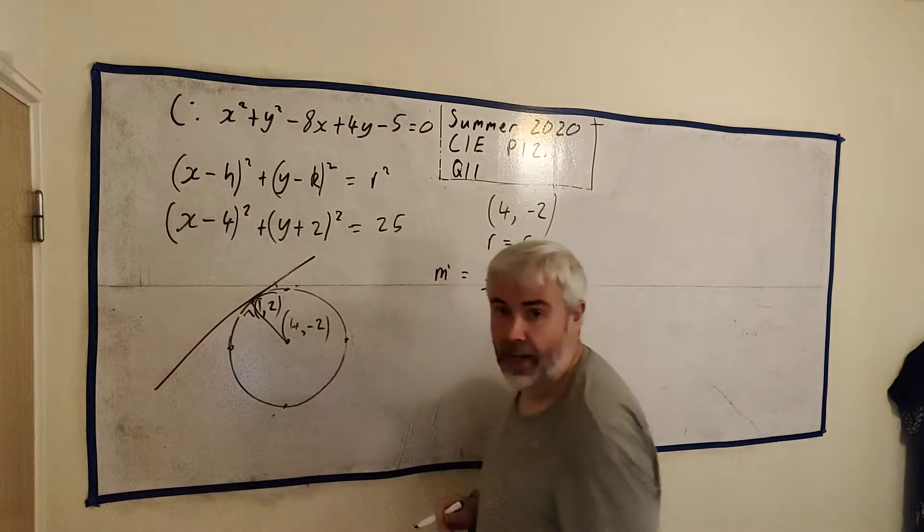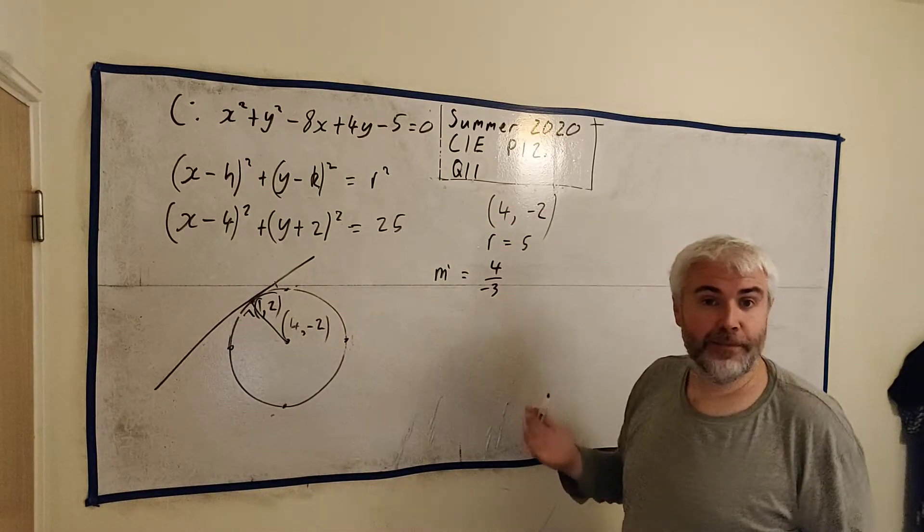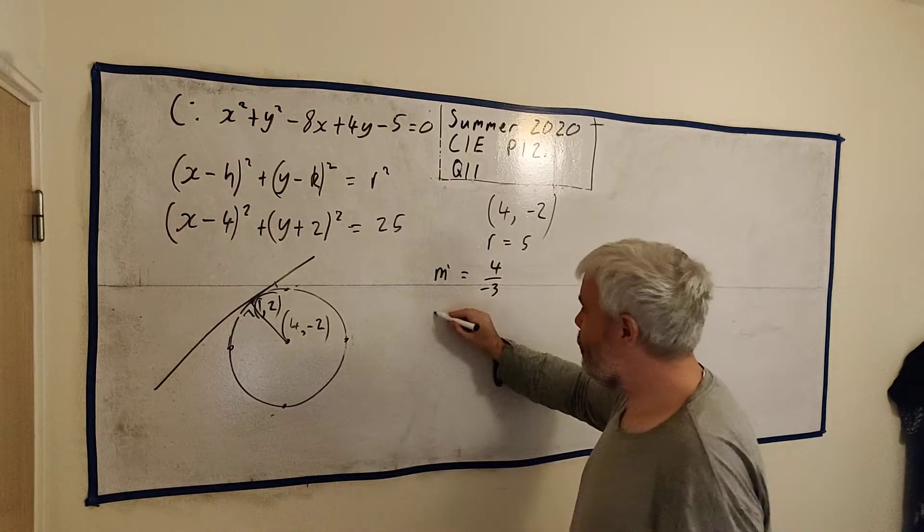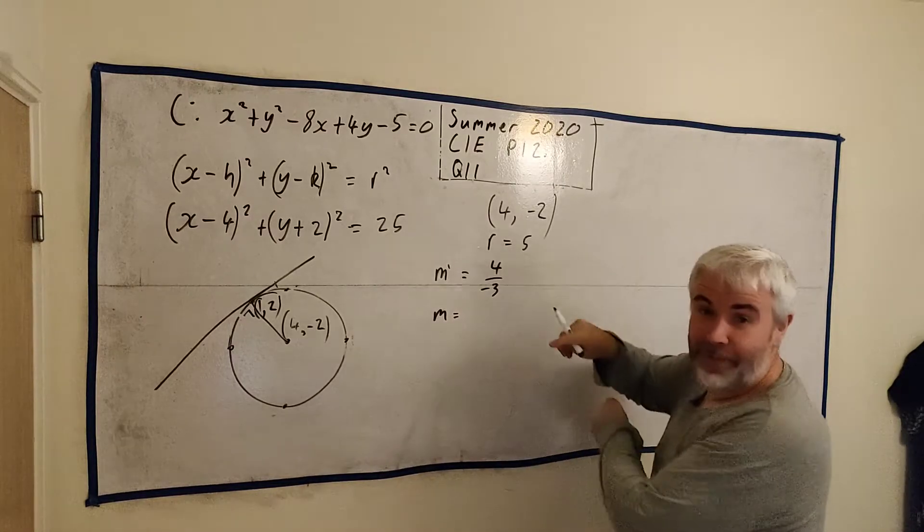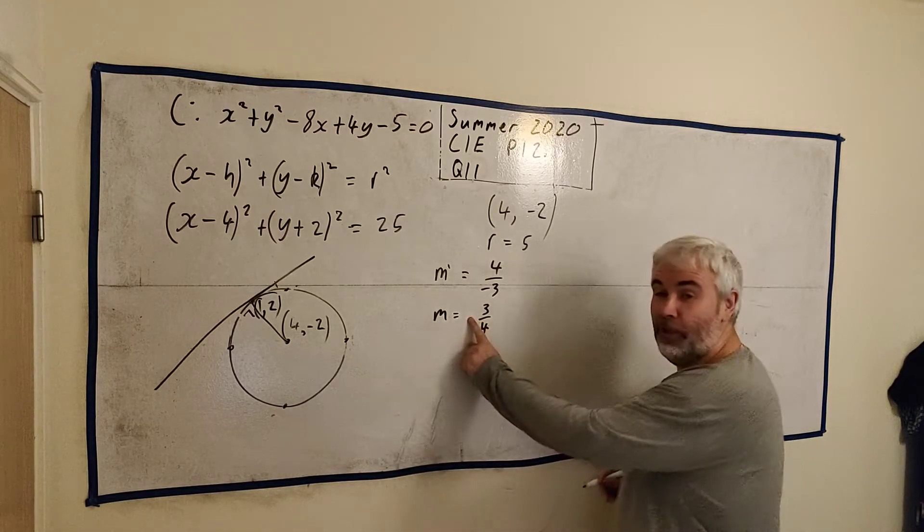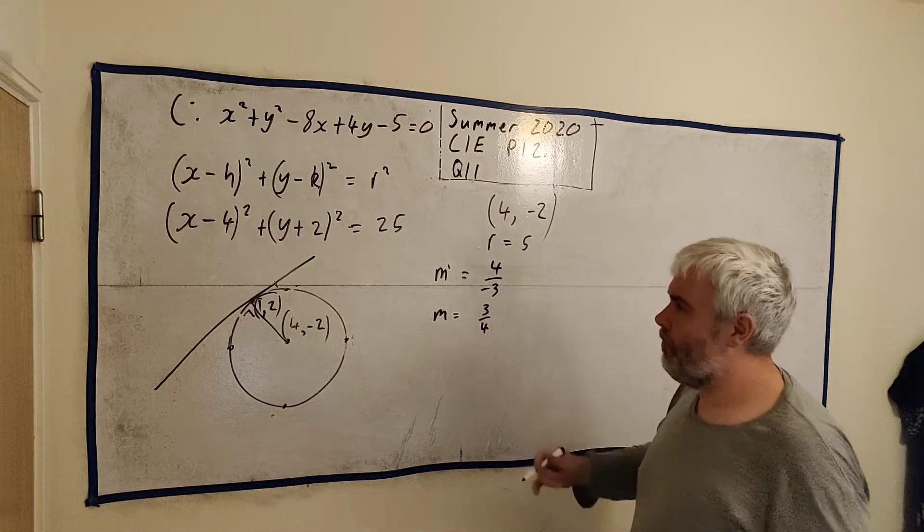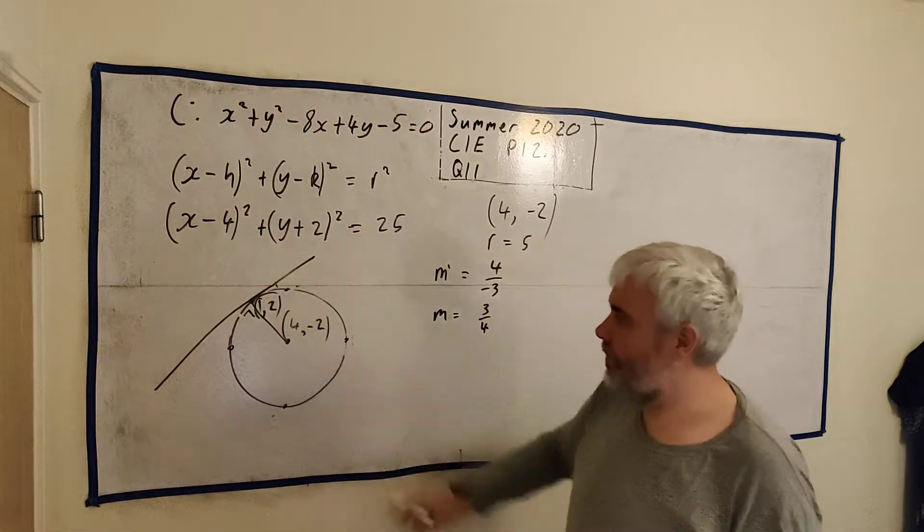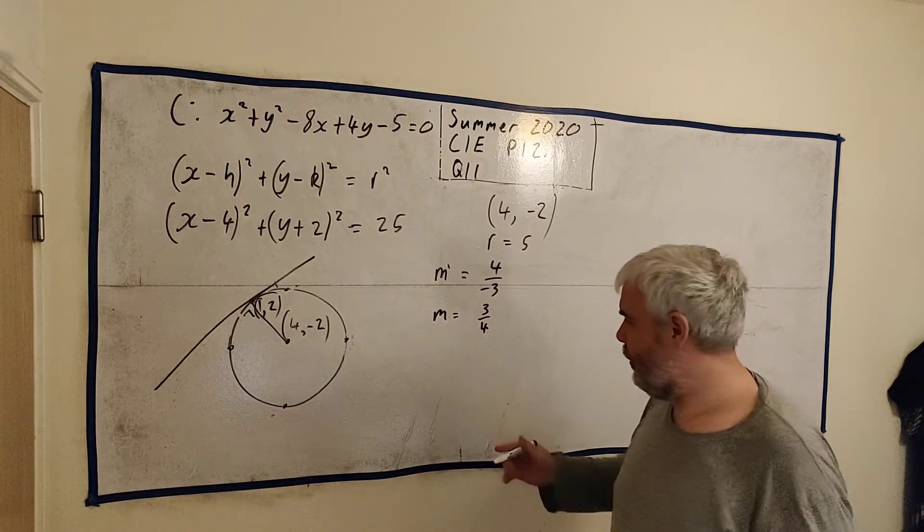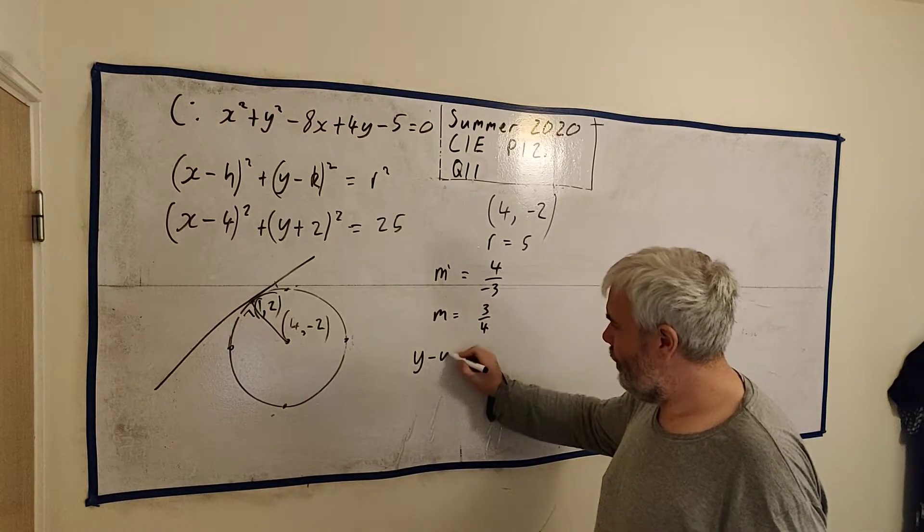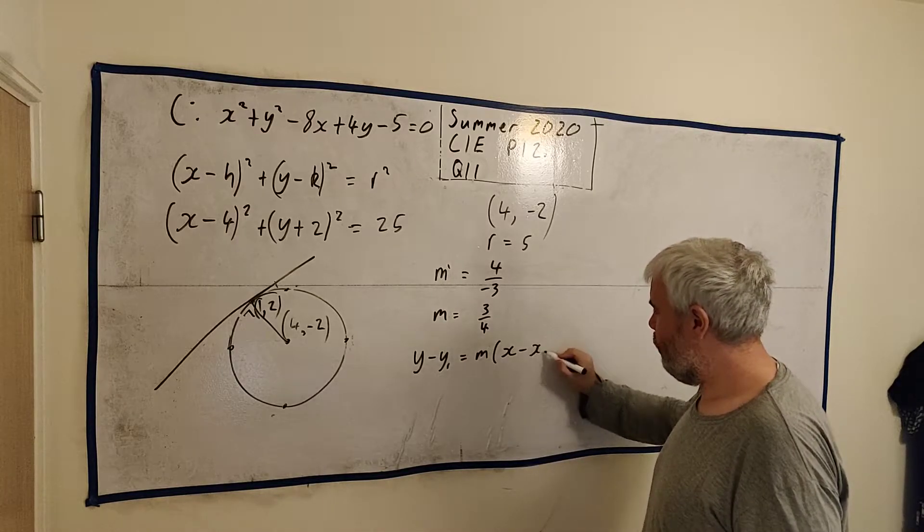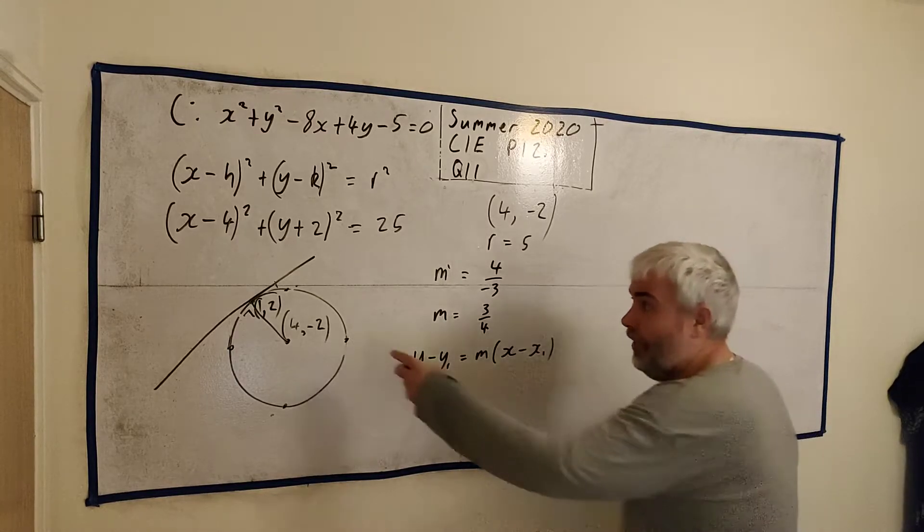So we'll say this y minus this y. So 2 minus minus 2 is 4. 1 minus 4 is minus 3. So that's the slope of this guy. The slope of this line, if we multiply by this is minus 1. That's a rule we remember. Basically the thing most students though remember is turn it upside down and change the sign. So the sign becomes plus. 3 over 4. That's the slope of this guy. We have a point. So we just use the equation of a line.